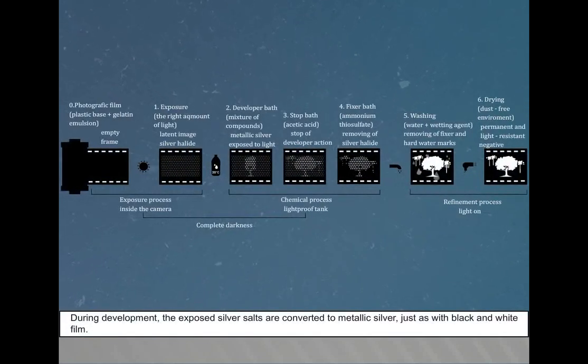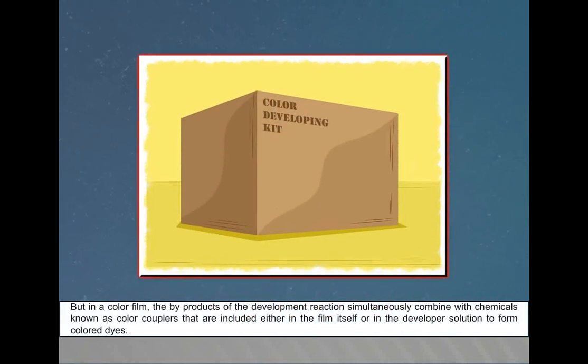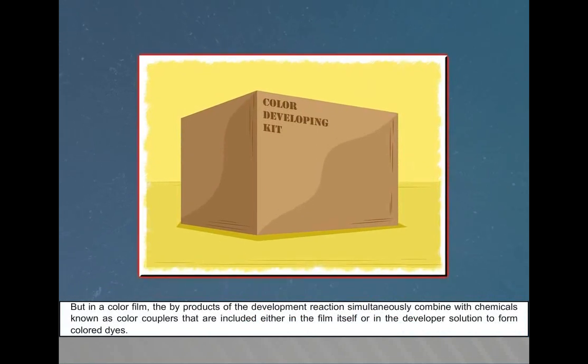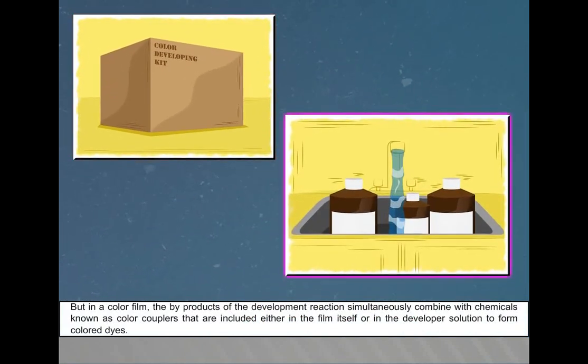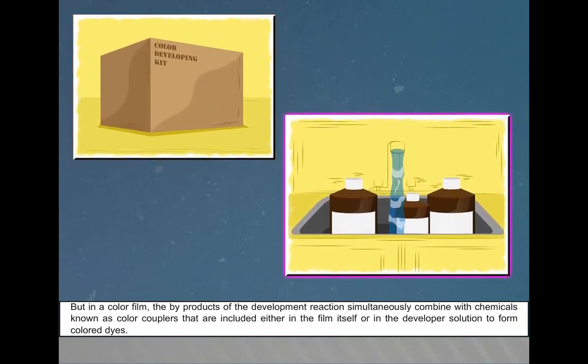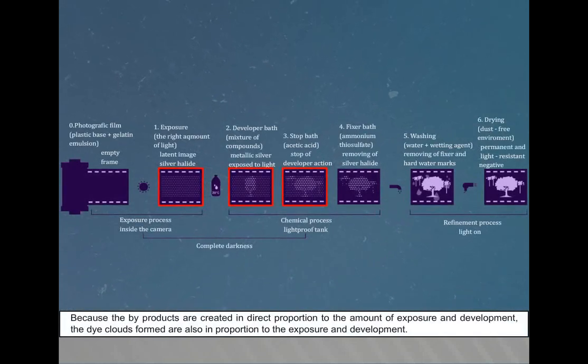During development, the exposed silver salts are converted to metallic silver just as with black and white film. But in color film, the byproducts of the development reaction simultaneously combine with chemicals known as color couplers that are included either in the film itself or in the developer solution to form colored dyes. Because the byproducts are created in direct proportion to the amount of exposure and development, the dye clouds formed are also in proportion to the exposure and development.